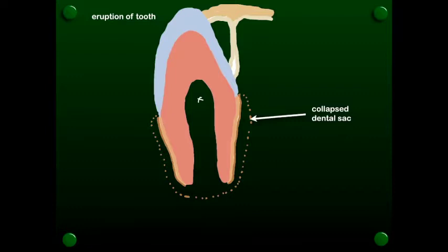Some of these cells are going to then differentiate into cementoblasts and they're going to form the cementum which cements the tooth into the socket. So the cementum, we're going to have Sharpie's fibers which are going to make up the periodontal ligament that are going to go from the cementum into the alveolar bone.